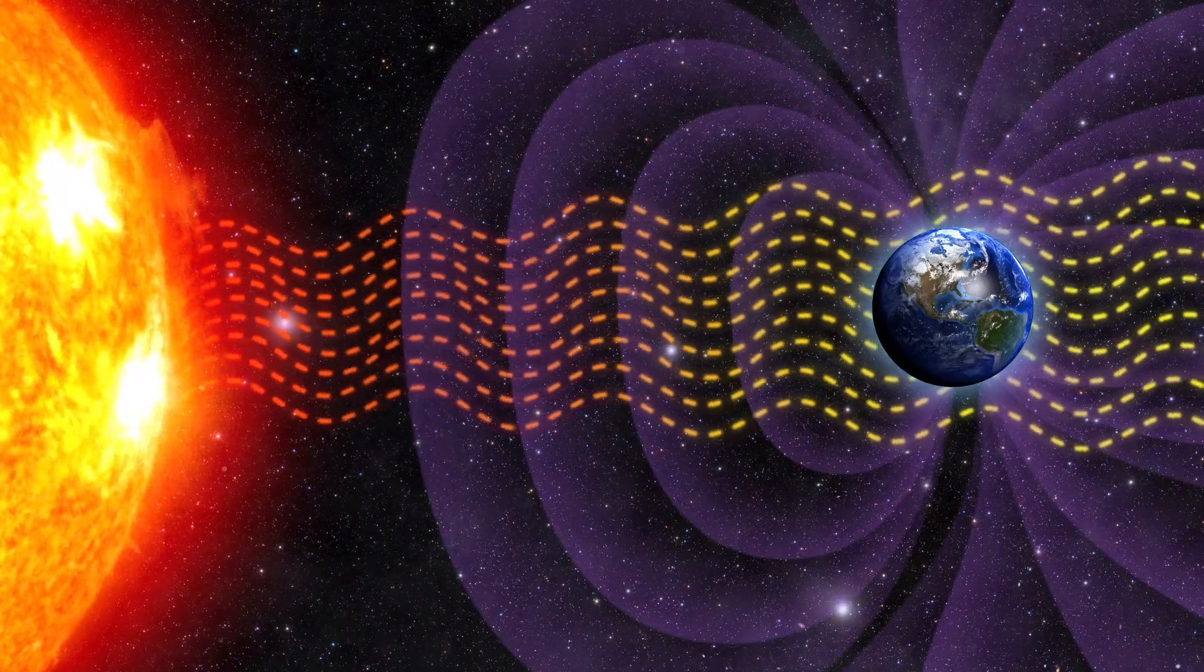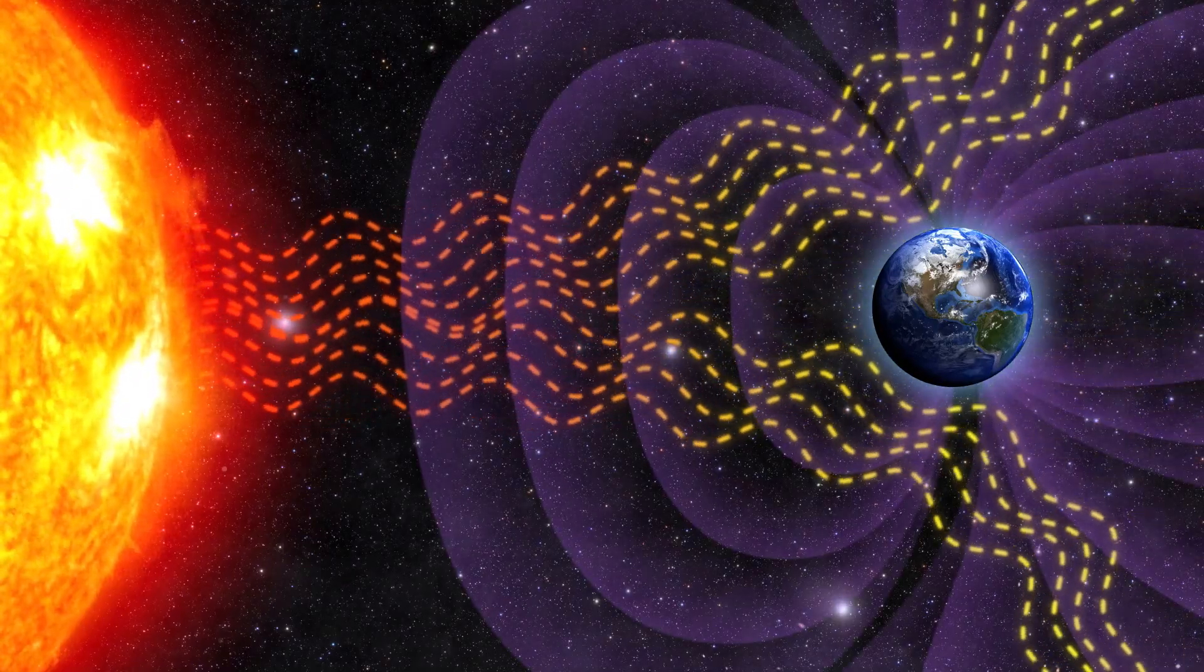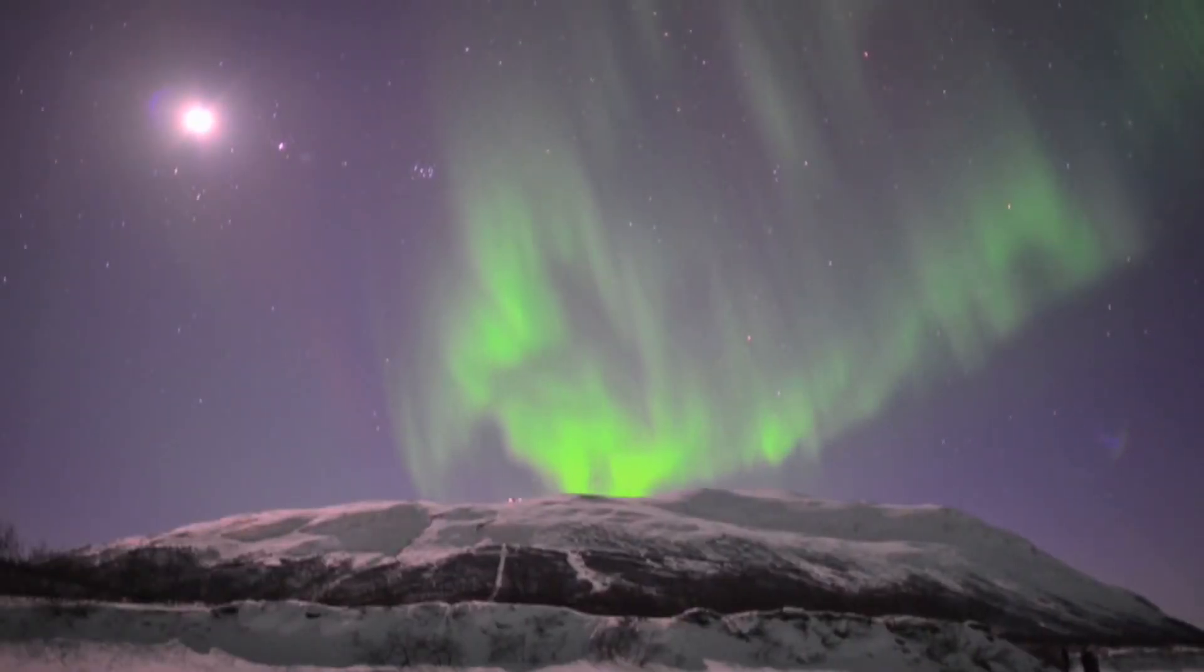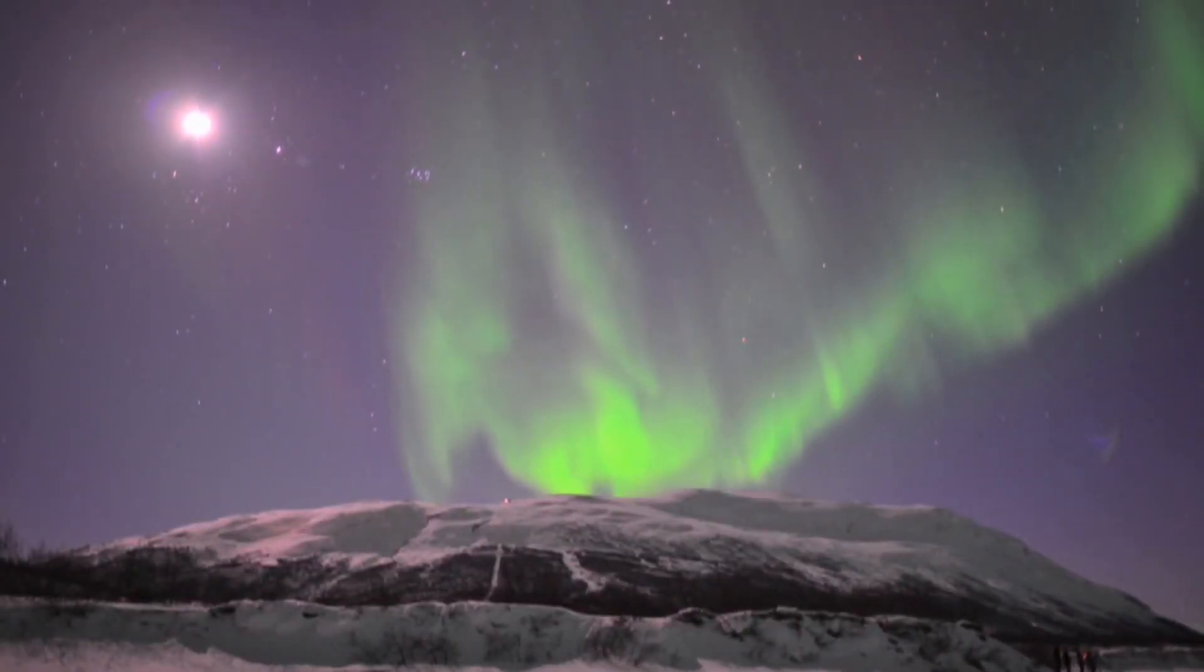Earth's magnetic field protects us from most of these high-energy particles, diverting them towards our poles, where they cause auroras as they react with the upper atmosphere. But even with that force field in place, a few of them do make it down to us.